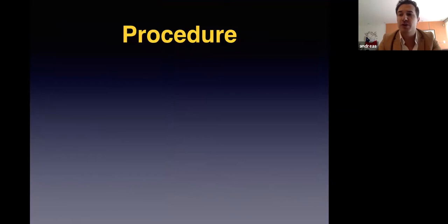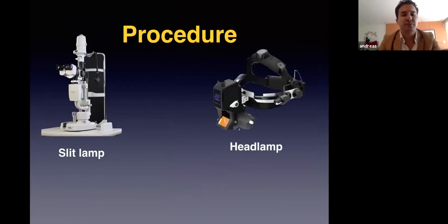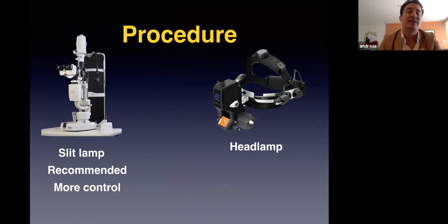For the procedure, you can use either the slit lamp or the head lamp. The slit lamp is always recommended because it's easier and gives more control. The use of the head lamp depends on the experience of the surgeon and the condition of the patient, as some patients cannot tolerate sitting or require the procedure to be done with a head lamp.